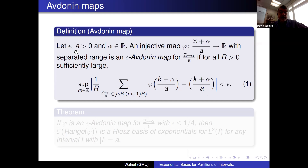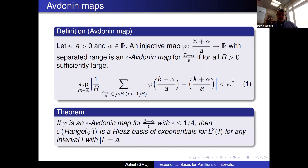Given ε, a, and α positive, we call an injective map from ℤ + α/a to ℝ with separated range an ε-Avdonin map for ℤ + α/a if for all sufficiently large R this averaged inequality holds — with ε on the right side. If φ is an ε-Avdonin map for ℤ + α/a with ε ≤ 1/4, then the exponentials on the range of φ form a Riesz basis for L²(I) for any interval of length a.